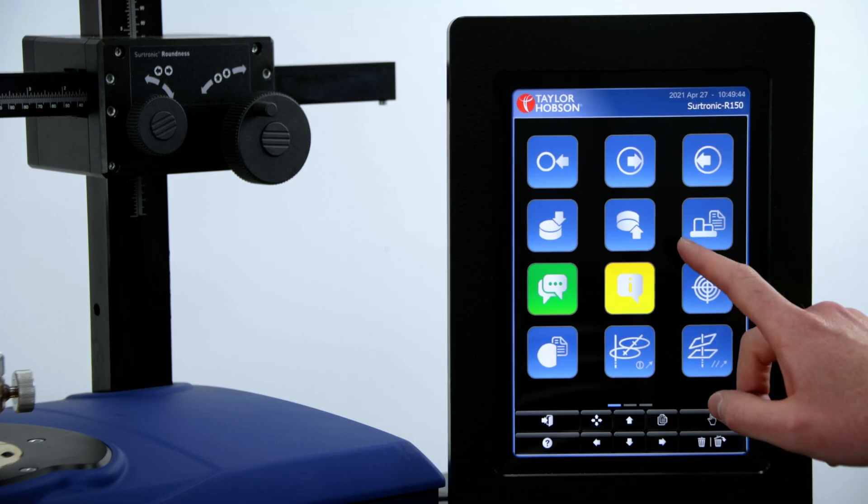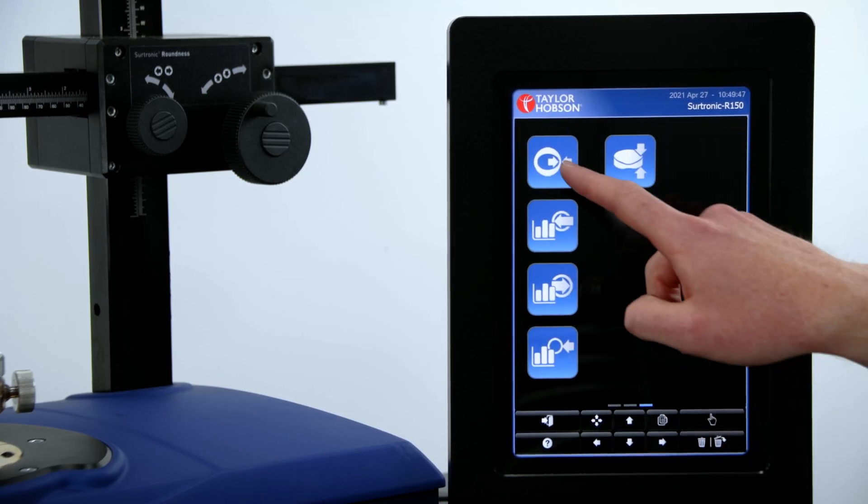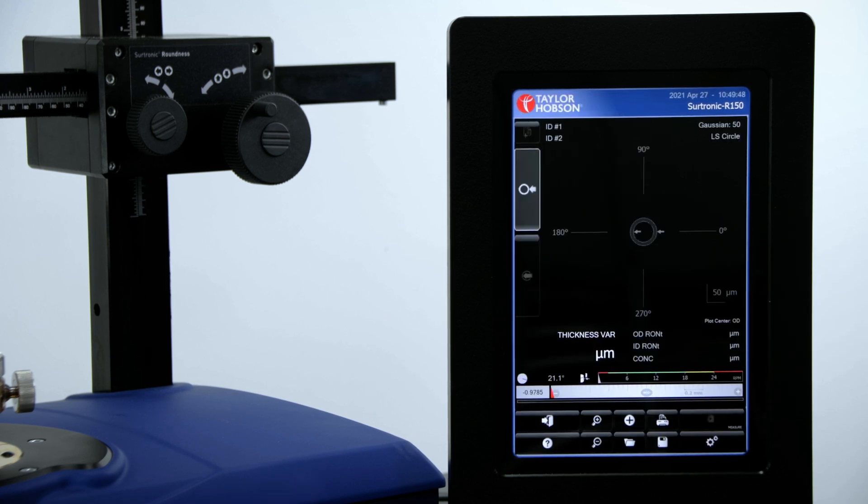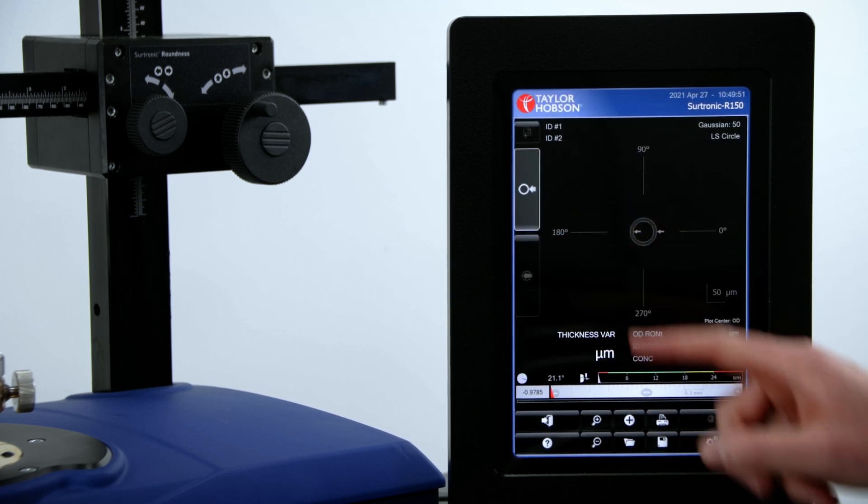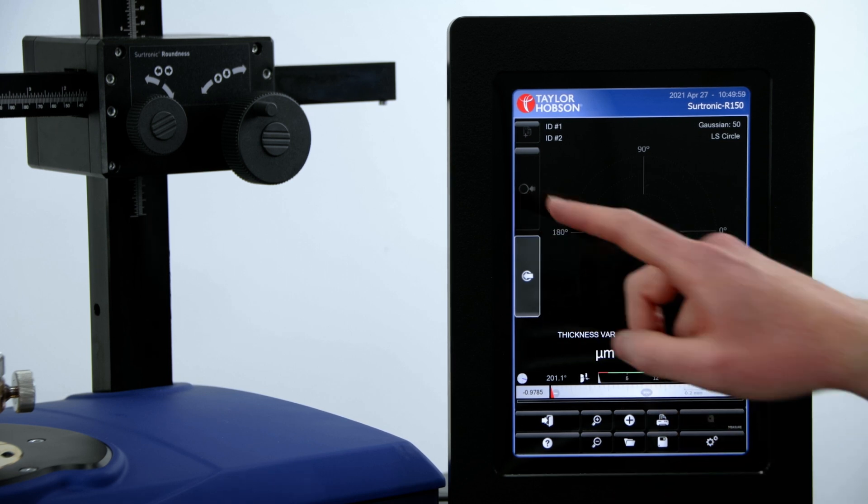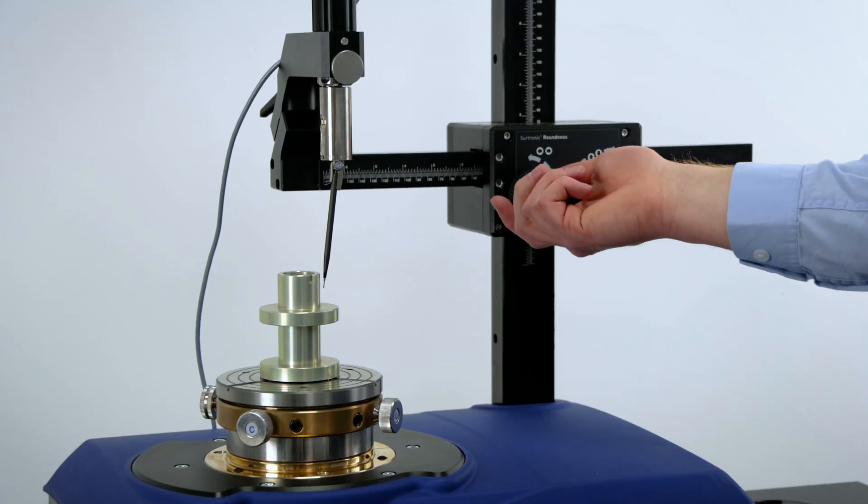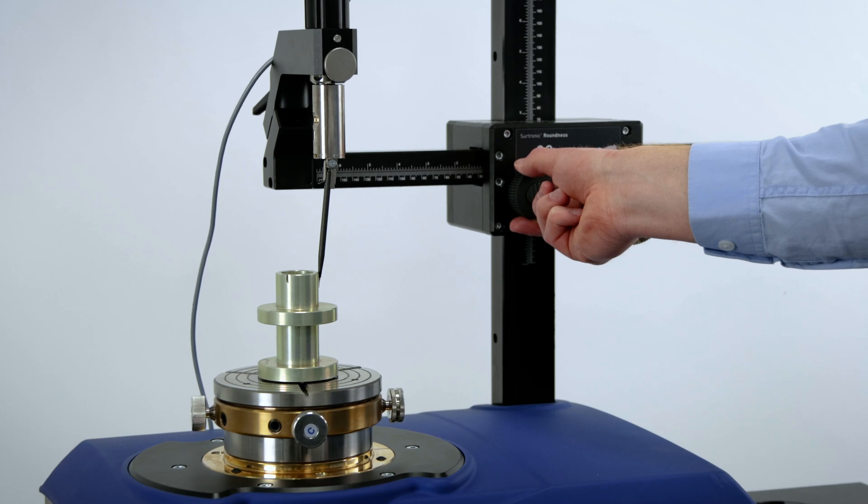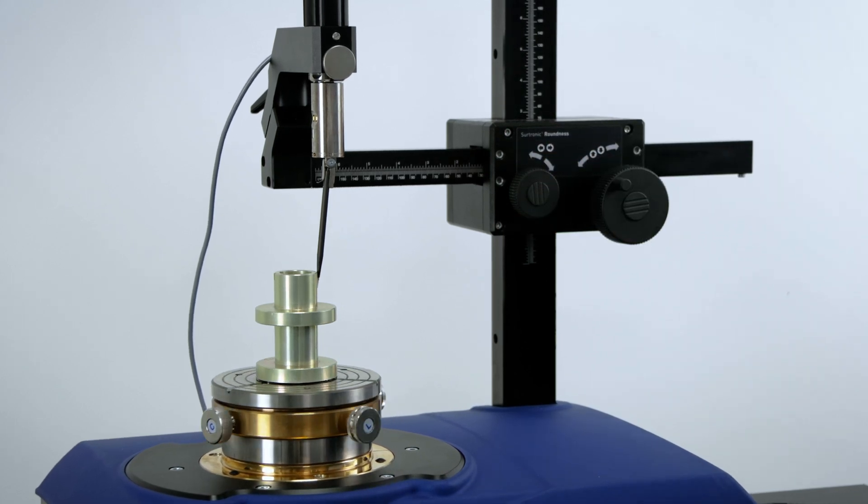To take the measurement, we navigate to the wall thickness app. Once in the app, we have two icons: the first for the outside measurement and the second for the inside measurement. I'm going to start with the outside measurement. For the first measurement, we contact onto the outside of the part and click measure.